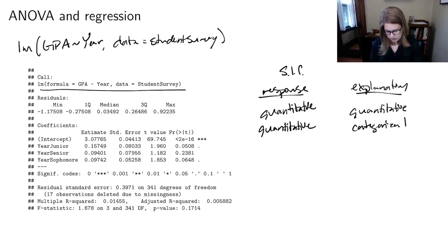And what you might notice looking at this table of coefficients is I have one that says year junior. It's kind of all one word. I have one that says year senior, all one word, and year sophomore, all one word. But I don't have year first year anywhere. And that's because R, by default, will pick one of the groups to use as the intercept. So the intercept is the one that is representing first year.